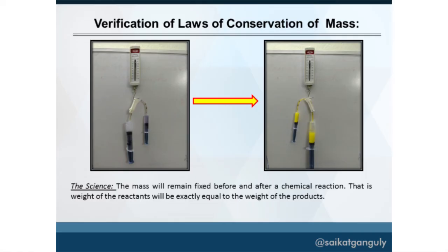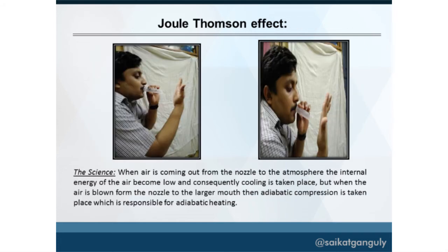For verification of conservation of mass, you require two syringes — one smaller and one larger in diameter — and a saline tube controller. You push the plunger to mix two reacting liquids, and before and after the reaction, the weight remains the same, which can be verified using a spring balance set in the apparatus.